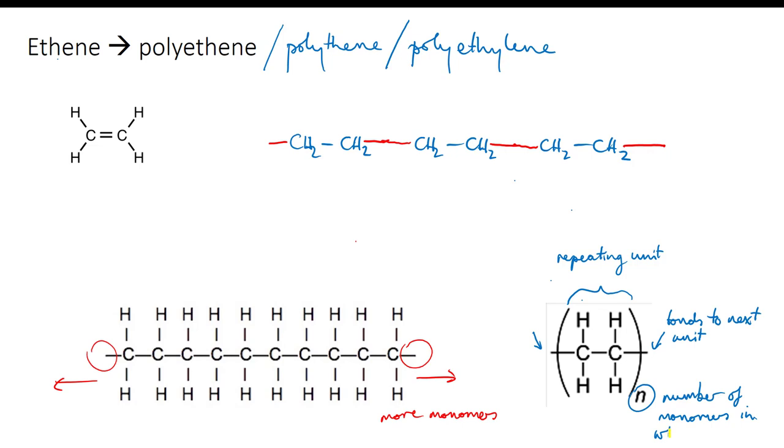If a chemist produces some polyethene in such a way that she knows how many repeating units there are per molecule, this is called the degree of polymerization, then she should write the actual number, instead of an n.